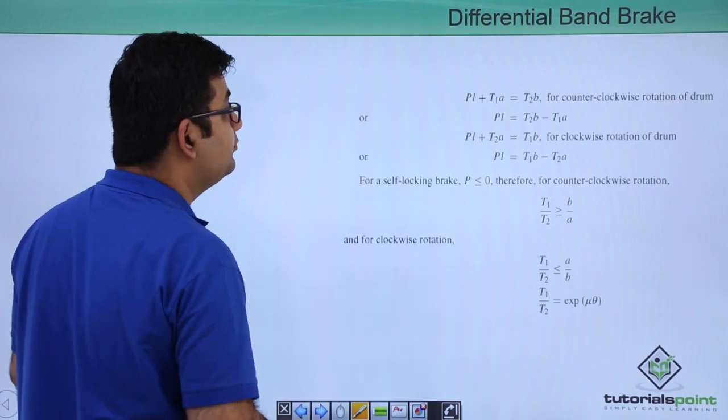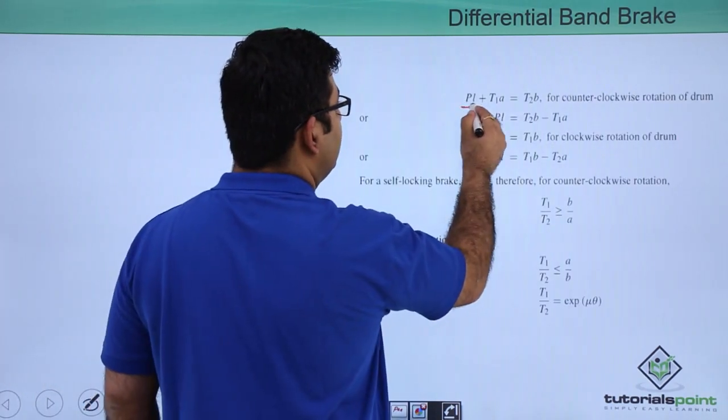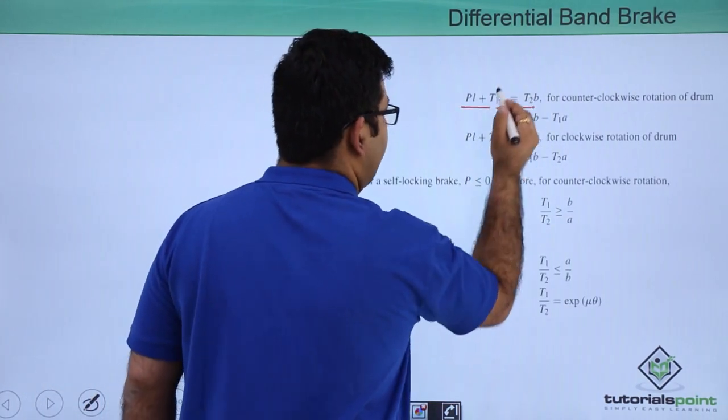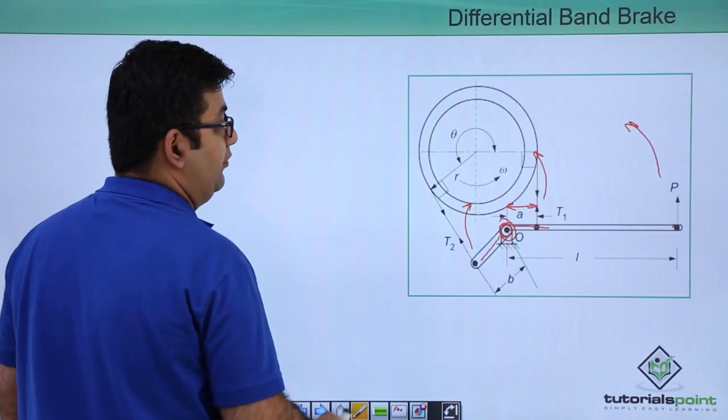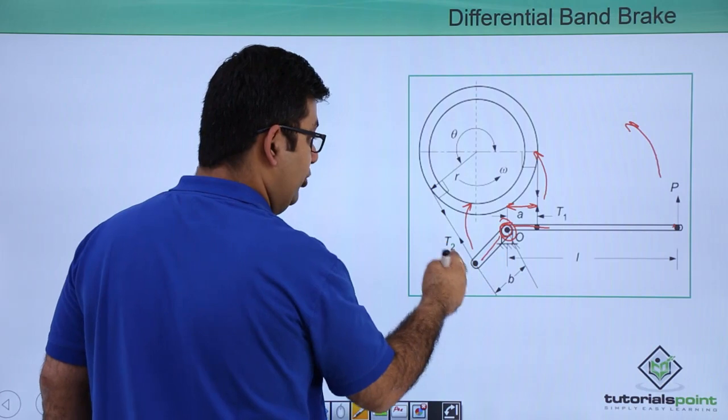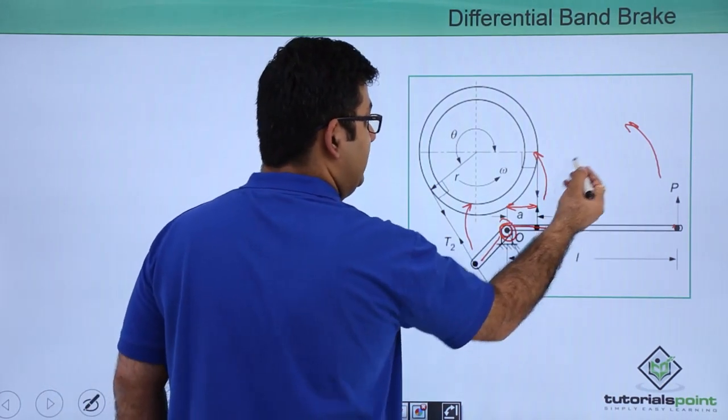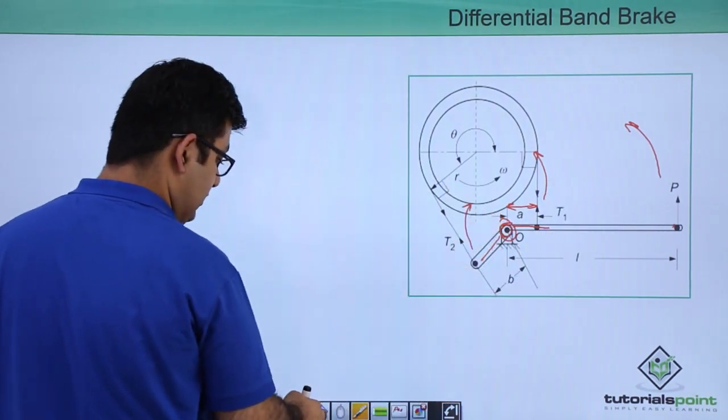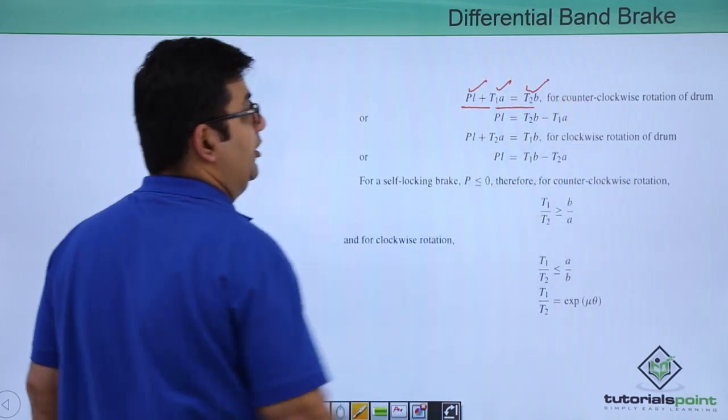So we have P*L + T1*A = T2*B. This is what we had: P*L, T1*A, T2*B. So these two—this plus this—is equal to this. This is true when the rotation is counter-clockwise.